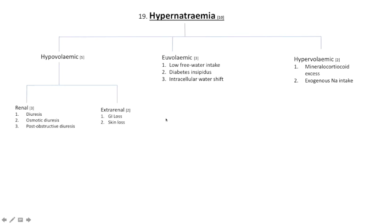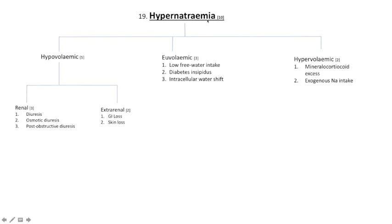For euvolemic hyponatremia, the patient is clinically euvolemic — JVP is neither raised nor low, and the patient is not clinically overhydrated or dehydrated. Causes include low free water intake, diabetes insipidus — a problem with the posterior pituitary's inability to elaborate antidiuretic hormone — and intracellular water shifts. For hypervolemic hyponatremia, we look at mineralocorticoid excess, thinking about Cushing's and Conn's, and exogenous sodium intake. That gives you two hypervolemic, five hypovolemic, and three euvolemic — ten causes of hyponatremia in total.